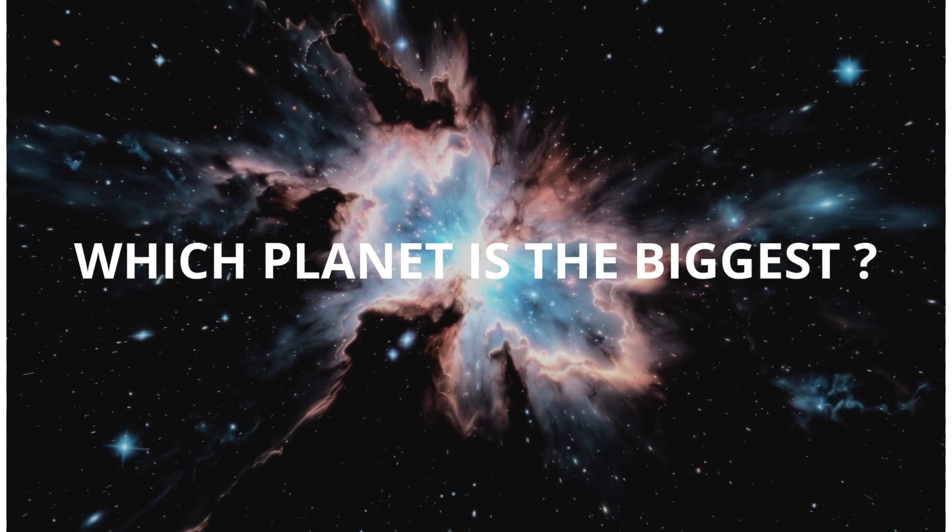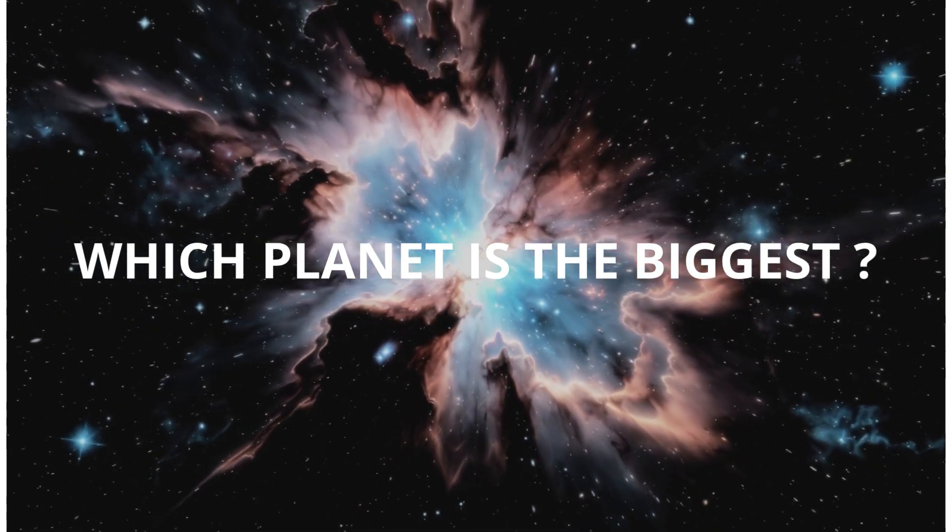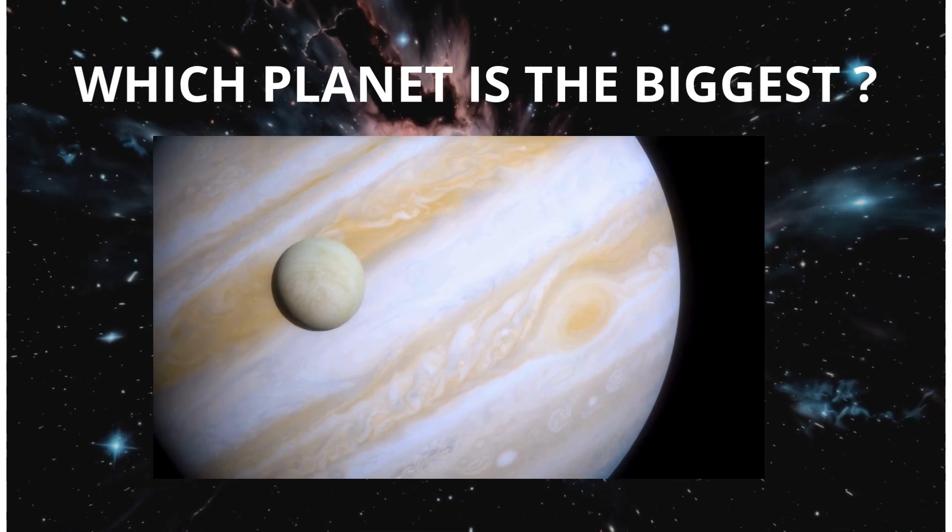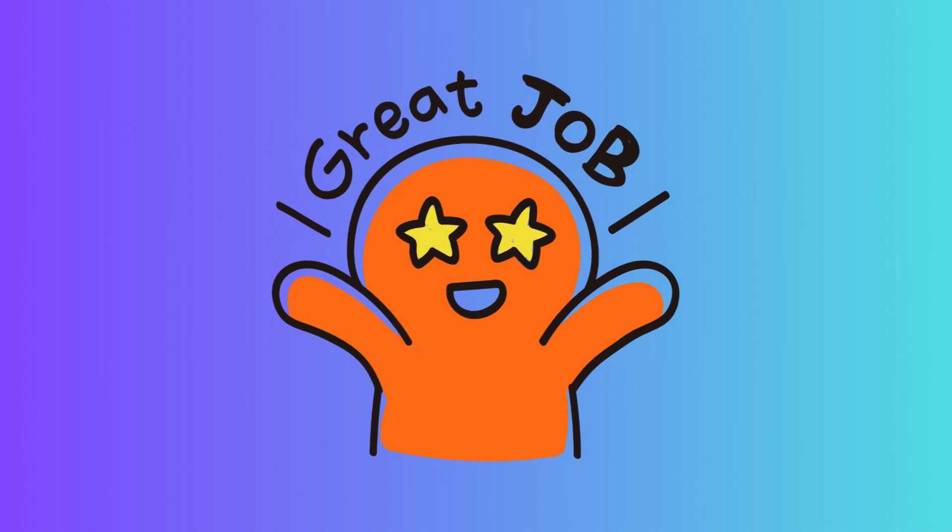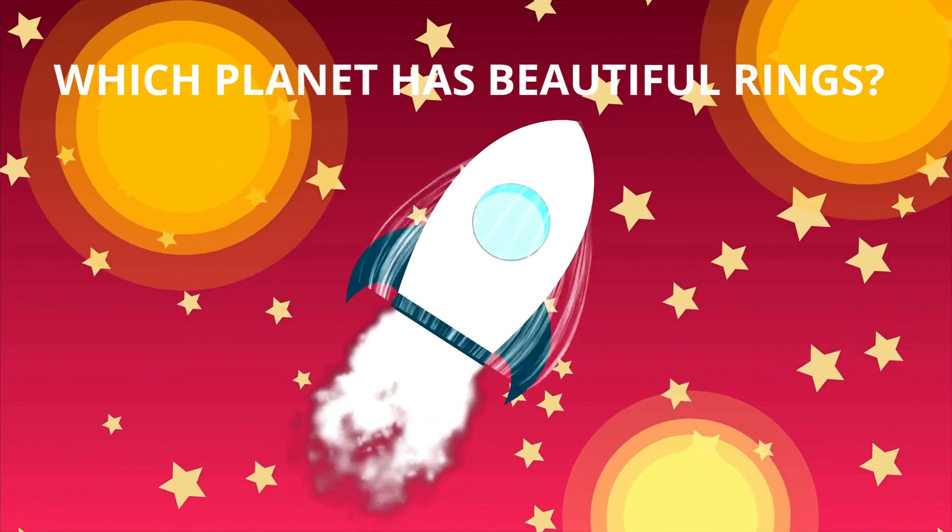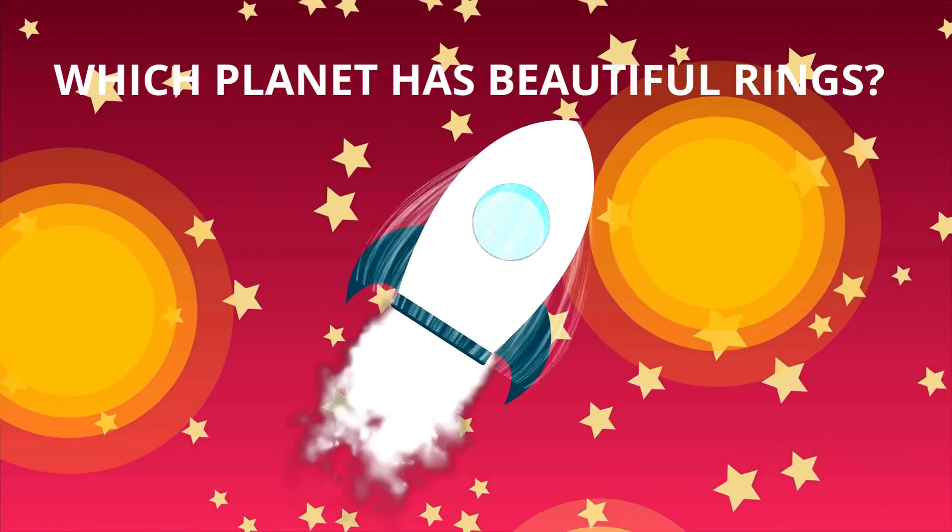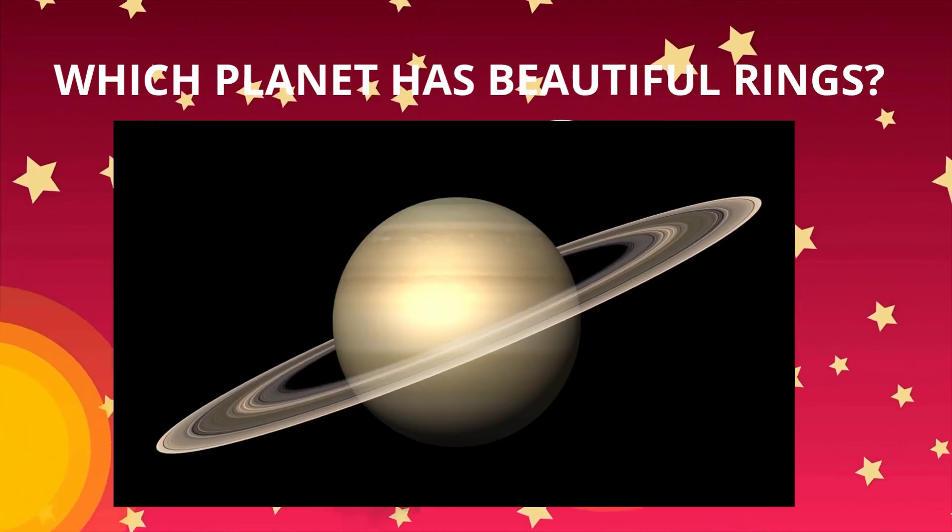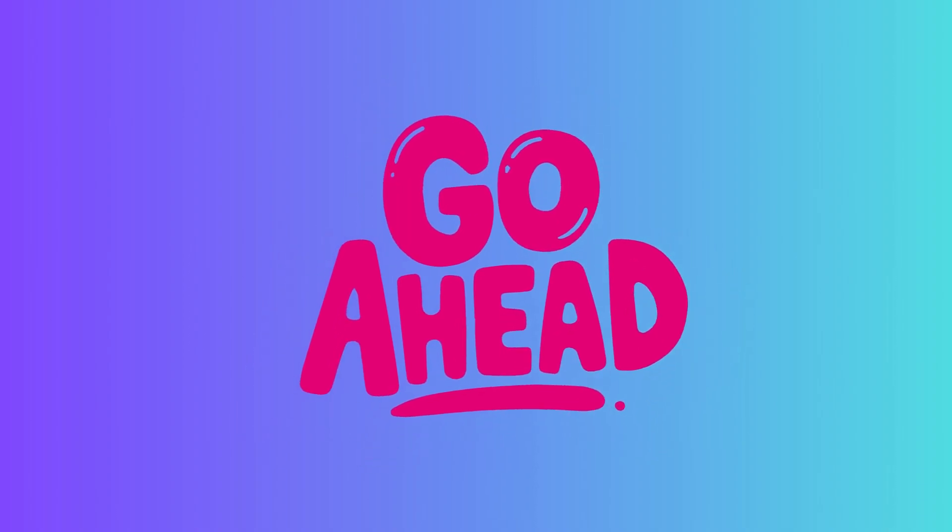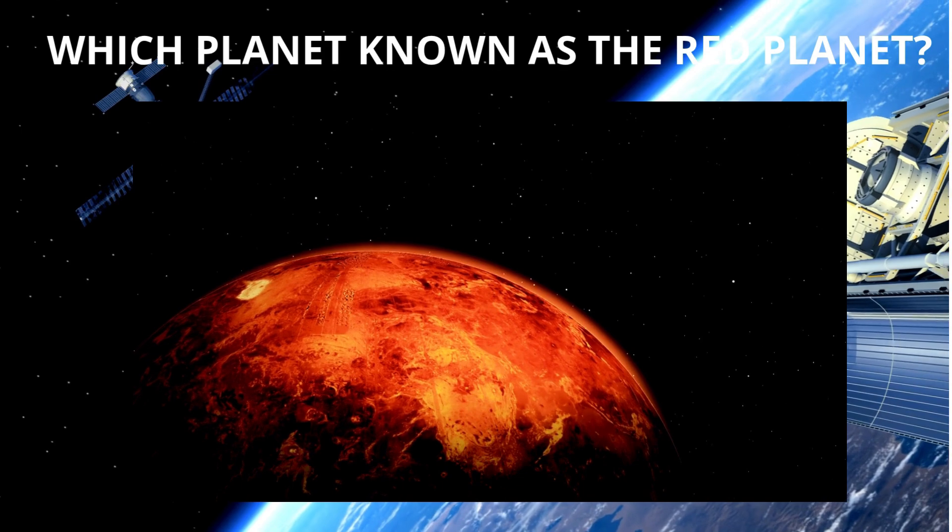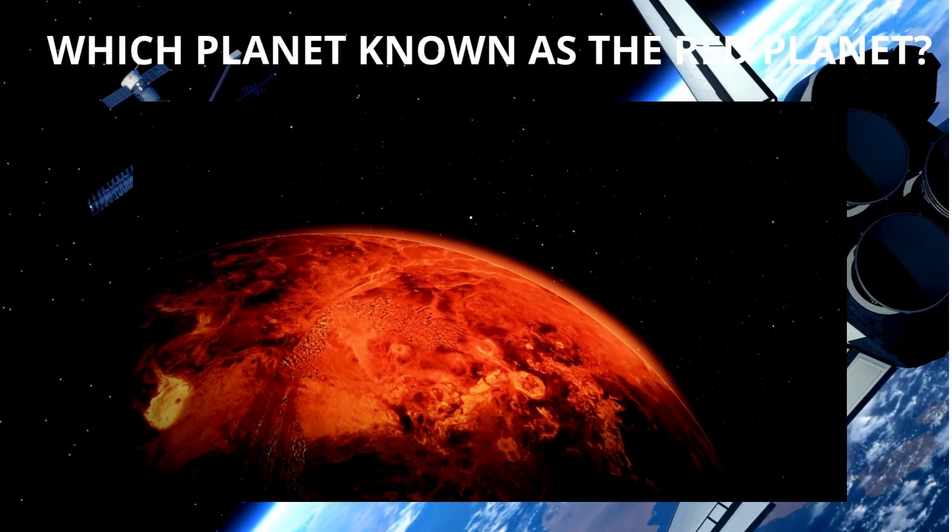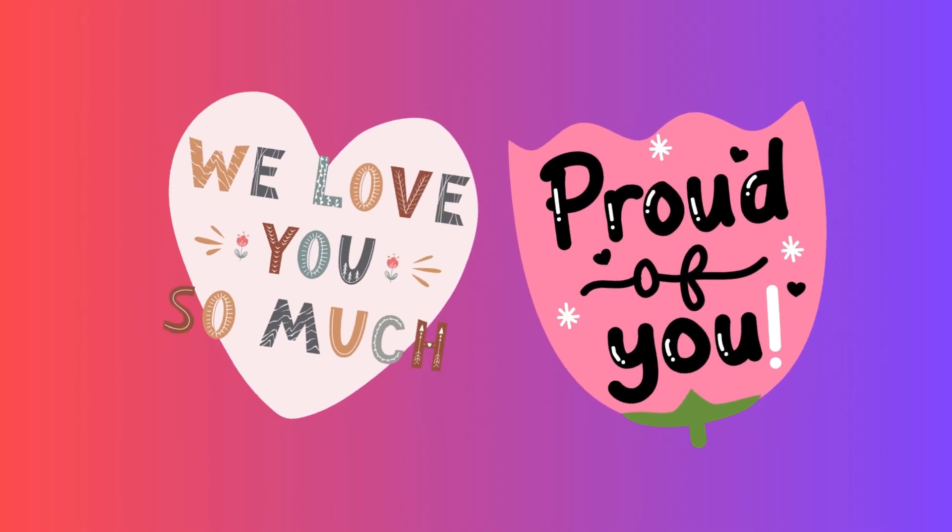Which planet is the biggest? Saturn, Jupiter, Neptune. Perfect, it's Jupiter. Great. Which planet has beautiful rings? Mars, Saturn, Uranus. So smart, it's Saturn. Go ahead. Which planet known as the red planet? Venus, Mars, Mercury. You are great, it's Mars planet. So proud of you.